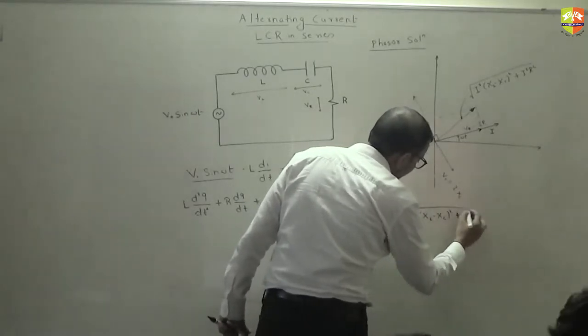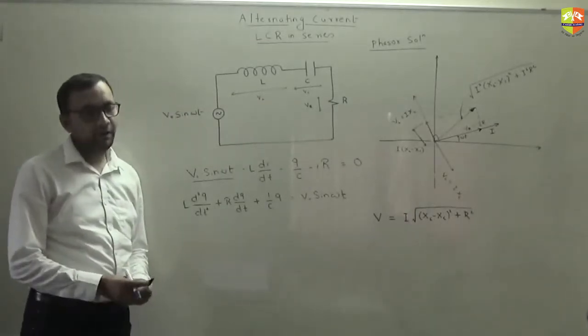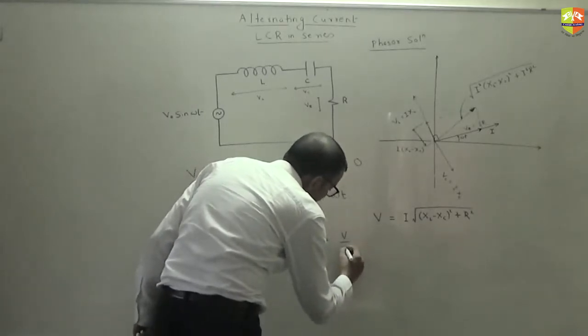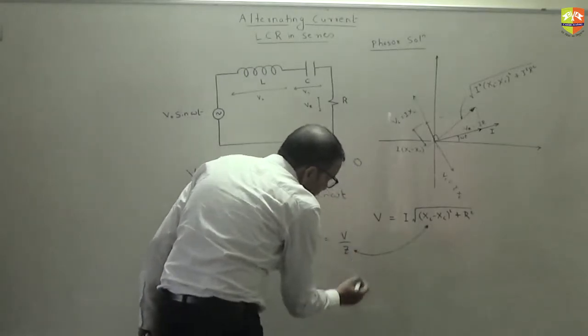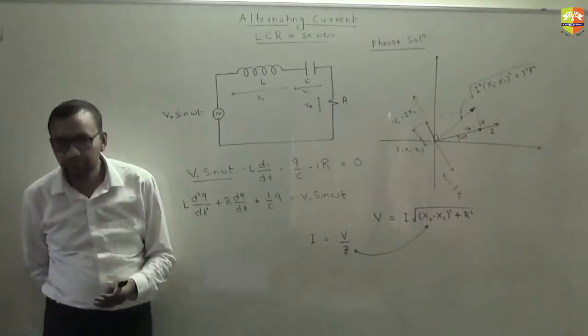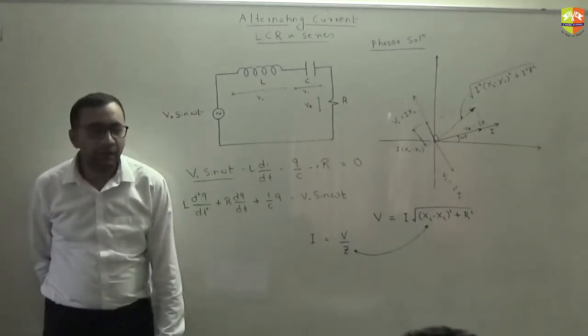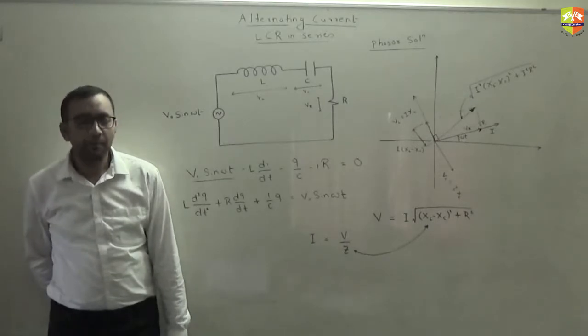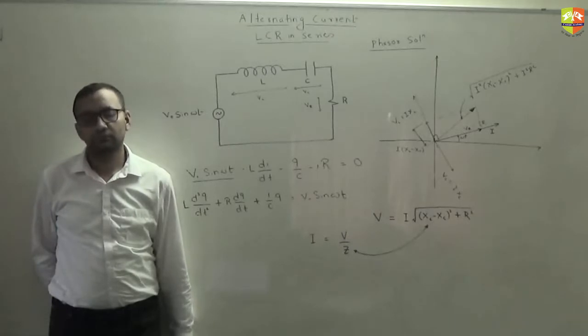So basically what you are getting is this: V is equal to I times root over XL minus XC whole square plus R square, where XL is inductive reactance, XC is capacitive reactance. So current will be V by Z, where Z is this. Z also behaves like a resistance. There is a special name to Z. It is called impedance. Impedance is like equivalent resistance.